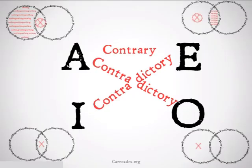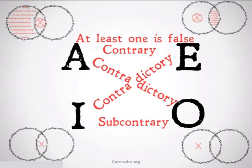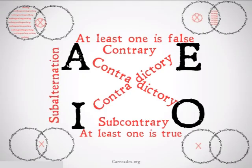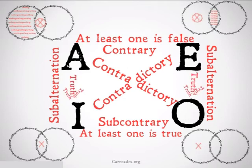A and E propositions are contrary — that means at least one is false. I and O propositions are subcontrary — at least one of them is true. A and I propositions, as well as E and O propositions, have the relation of subalternation, which means that truth flows downward from the universals to the particulars, and falsehood flows upward from the particulars to the universals.